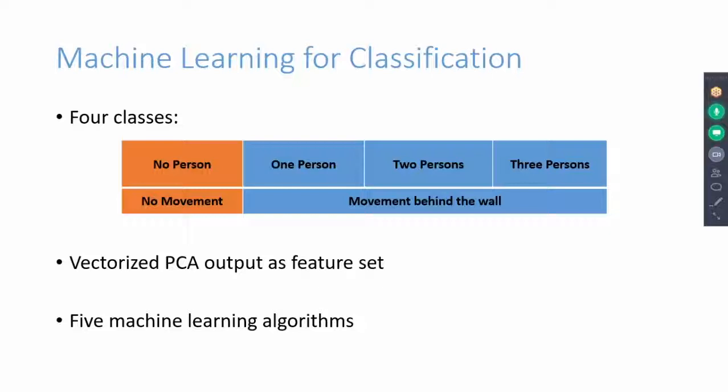We use five machine learning algorithms for classification. Classes include no person, one person, two persons, and three persons moving behind the wall.